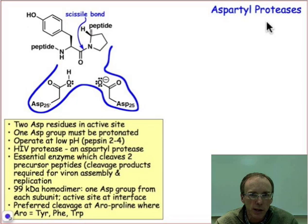About 20 years ago, scientists discovered that there was an aspartyl protease that was an essential enzyme to the replication of the HIV virus. And so immediately upon this discovery, this protein became the target of enzyme inhibition.